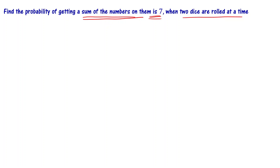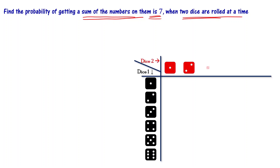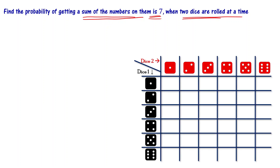Let's understand what happens when you roll two dice at a time. Die one can show any number: 1, 2, 3, 4, 5, or 6. Die two likewise can show 1, 2, 3, 4, 5, or 6. The first combination: if die one shows 1 and die two shows 1, you get (1,1). If die one shows 1 and die two shows 2, you get (1,2). So you get (1,1), (1,2), (1,3), (1,4), (1,5), and (1,6).